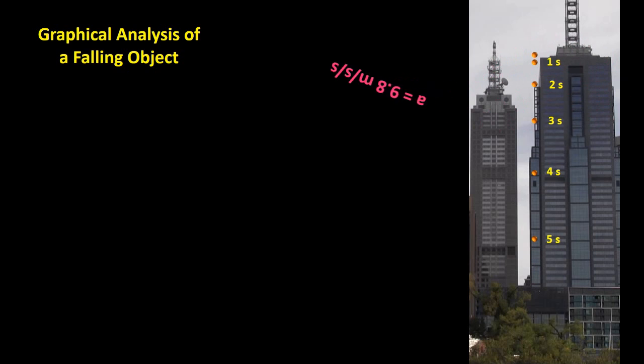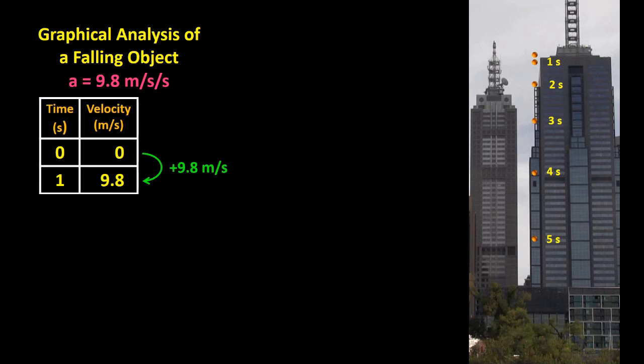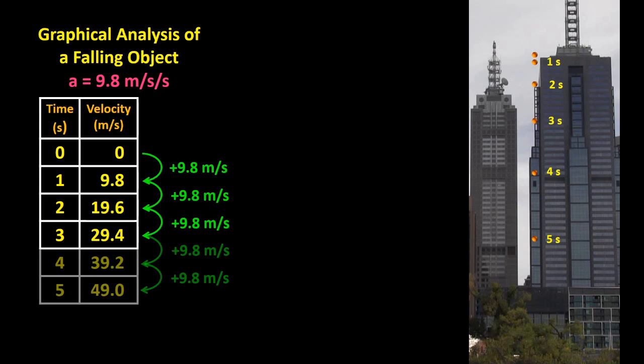Since the acceleration of a falling object is 9.8 meters per second per second, after falling for one second, an object will reach a velocity of 9.8 meters per second downwards. Then, after two seconds, it will have gained another 9.8 meters per second of velocity to reach 19.6 meters per second. And then after three seconds, it will have gained yet another 9.8 meters per second of velocity to reach 29.4 meters per second, and so on.